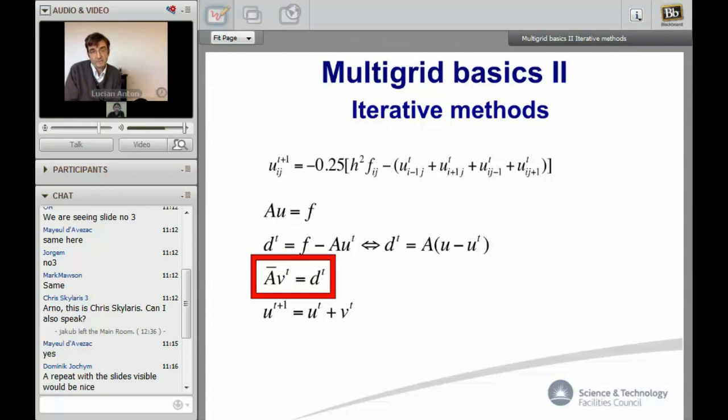Using the linearity of the operator A, you can write the equation in terms of error and defect. If you can solve that you are done. You add the error to the initial guess and that's it. But what people do is they use an approximation of A to find an approximation to the error. You add that approximated error to u and you get a new approximation and so on.